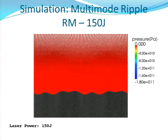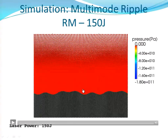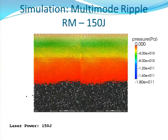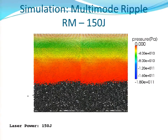As I mentioned, we're also interested in a new multimode ripple where we have different modes, and recently we've been running simulations on this — at 150 joules. As you can see, this one's not as clean. We've been working on coming up with a good multimode configuration where we can actually make sure to analyze this, because as of now it will be quite difficult to get values for a growth factor.